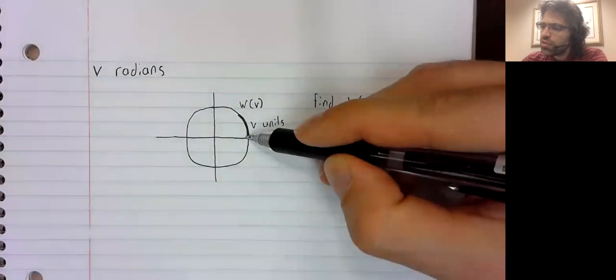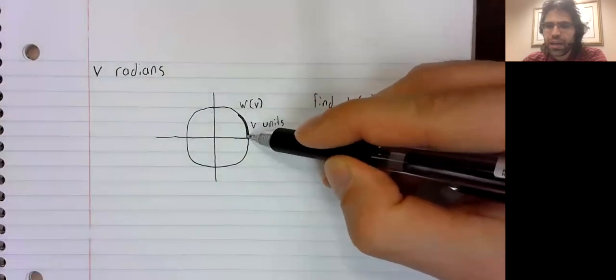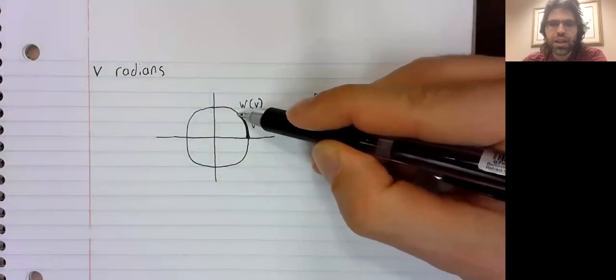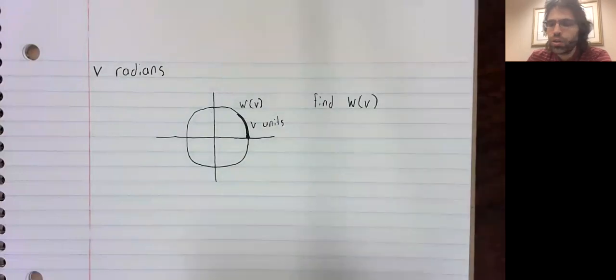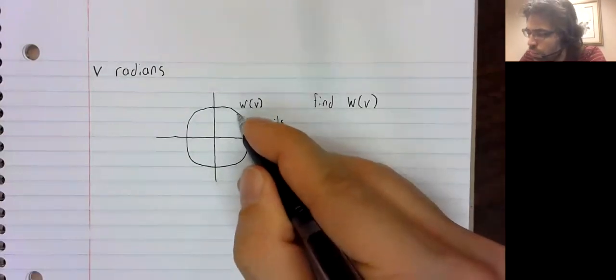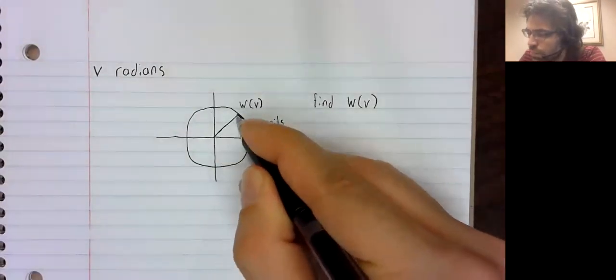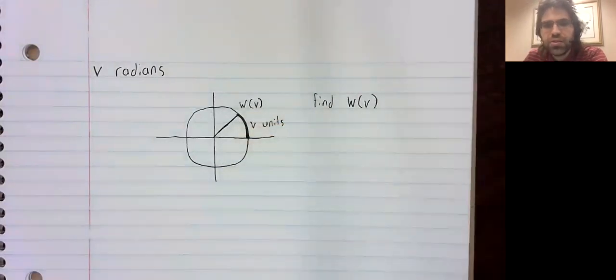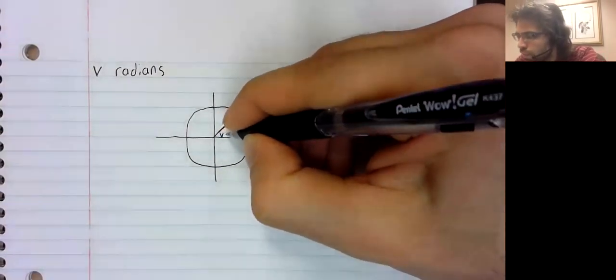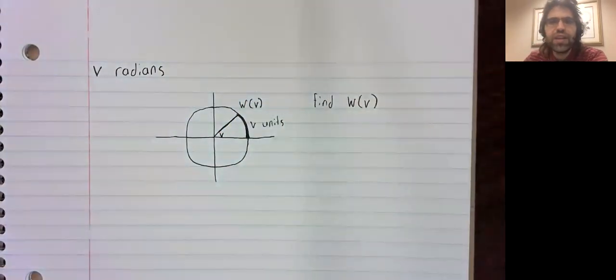Well, you see this path we've traveled has sketched out an arc on the unit circle angle. This angle is V radians.